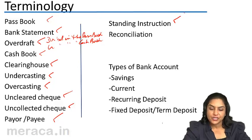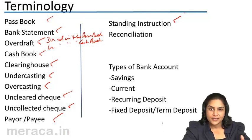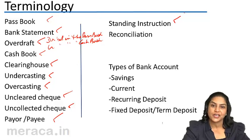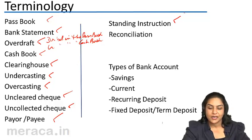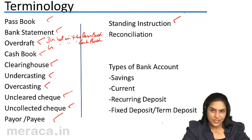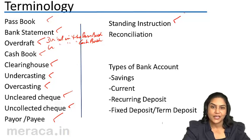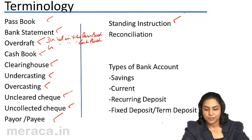Reconciliation would mean agreeing two differences. Reconciliation in banking and accounting would suggest an agreement between balances in two different books. When we talk of a bank reconciliation statement, we would be talking of reconciliation between the bank balance in the cashbook and the bank balance in the passbook.